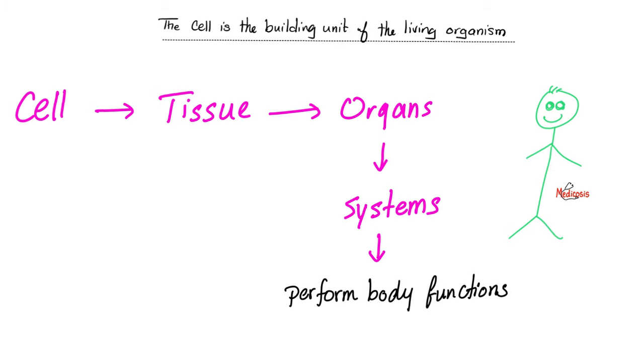As you know, the building unit of your body is the cell. Your body has to perform functions, and therefore it has systems, like your gastrointestinal system, respiratory system, cardiovascular systems. Therefore, you need organs like the heart, the lungs. Each organ is made of tissue, and each tissue is made of groups of cells.